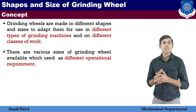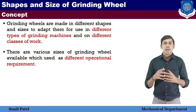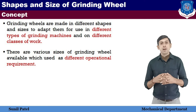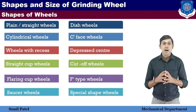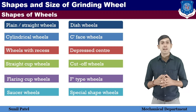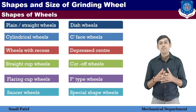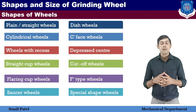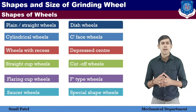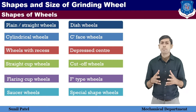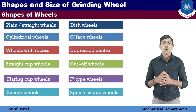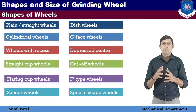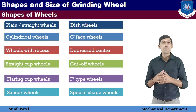Now we will see the list of different types of grinding wheels. These include the plain or straight wheel, wheel with recess, straight cup, flaring cup, saucer wheel, disc wheel, C-type wheel, F-type wheel, and special purpose wheels. All these wheels are available in the market.